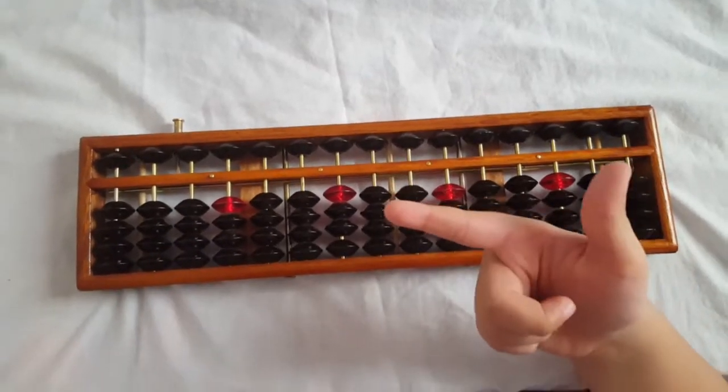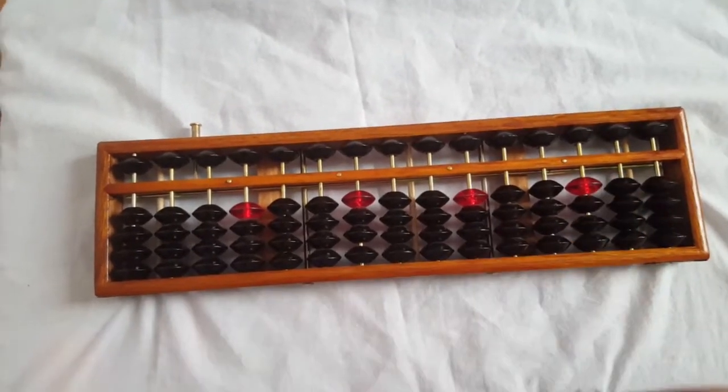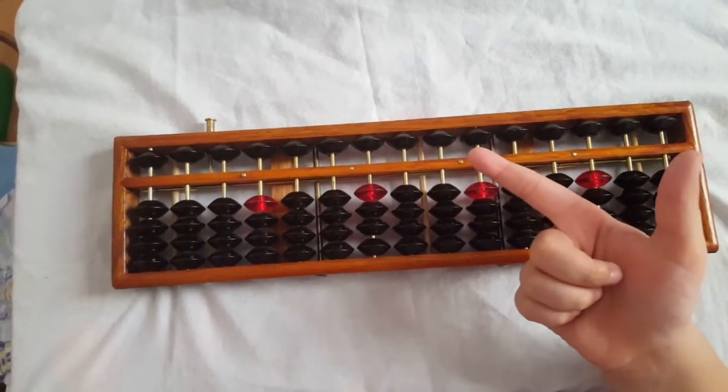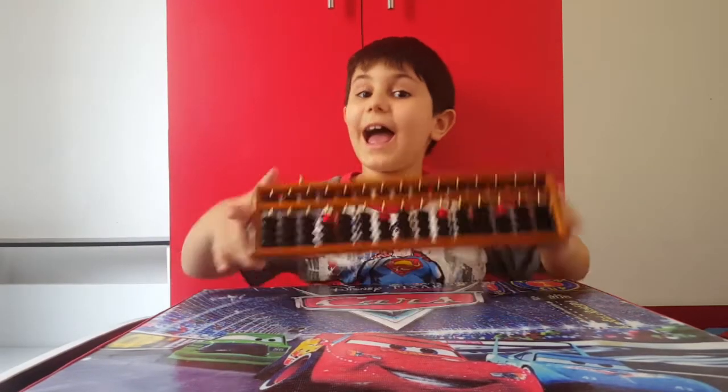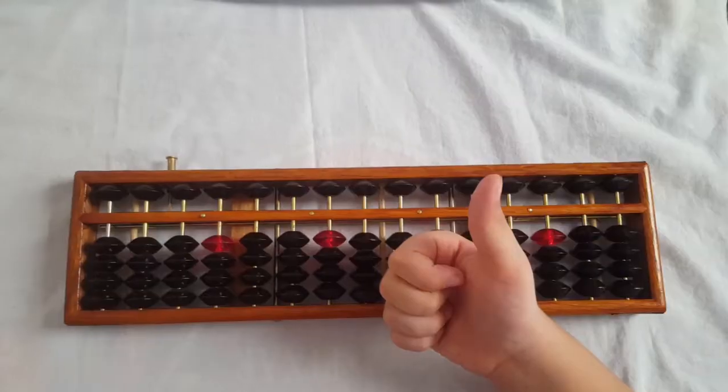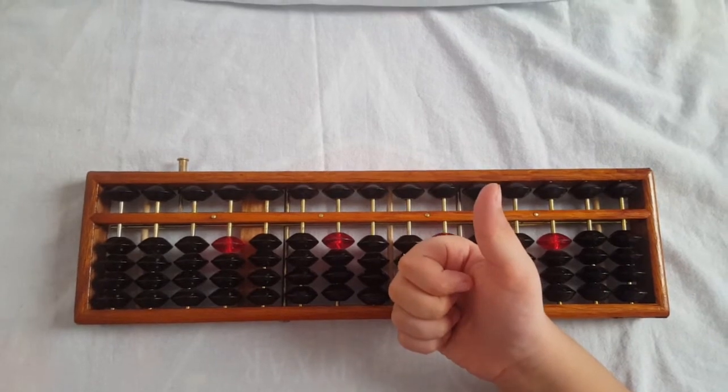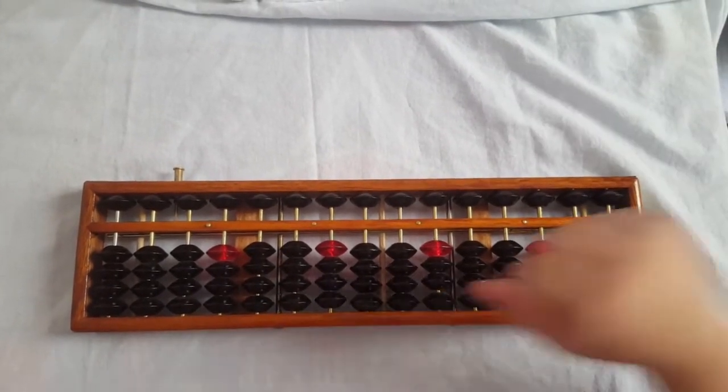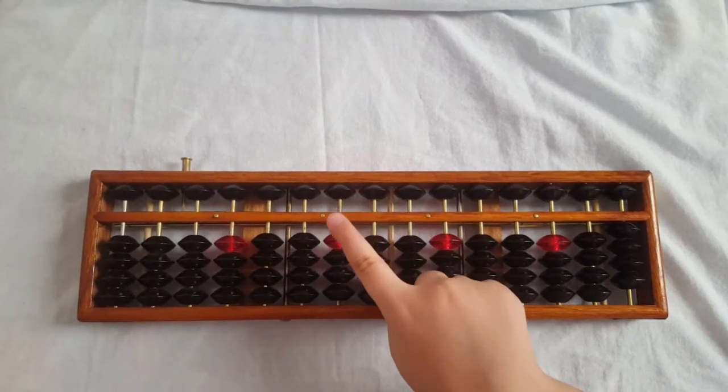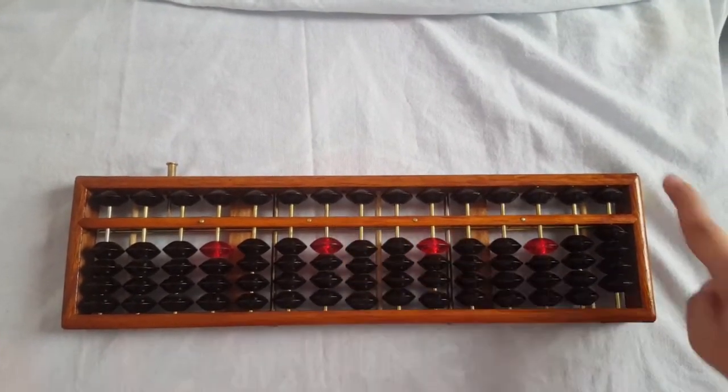We use these fingers, the thumb and the index finger. How to use the abacus? The job of the thumb is to move beads up, and the index finger is to move beads down.